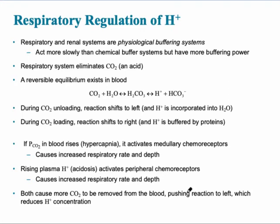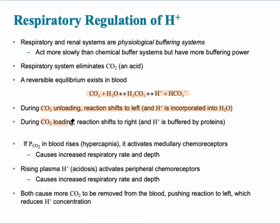The respiratory regulation of hydrogen occurs because of a reversible equilibrium reaction in the blood: carbon dioxide plus water can be converted into carbonic acid, which can then be released into hydrogen and bicarbonate. In the case of carbon dioxide unloading, the reaction shifts to the left and hydrogen is incorporated into the water. During carbon dioxide loading, the reaction shifts to the right and hydrogen is buffered by proteins.